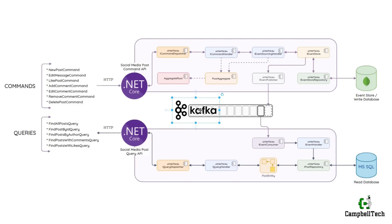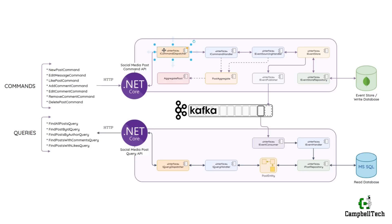And last but not least, we will use Apache Kafka to implement our event bus. A client can, for example, make a new post command request via HTTP to the social media post command API. The command API will then, from its controller method, dispatch the new post command object via the iCommandDispatcher interface to the relevant command handler method.